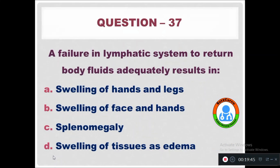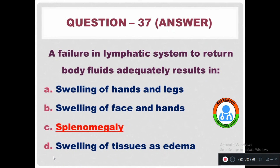Question 37: A failure in the lymphatic system to return body fluids adequately results in — Option A: Swelling of hands and legs. Option B: Swelling of face and hands. Option C: Splenomegaly. Option D: Swelling of tissues and edema. The right answer is splenomegaly — enlargement of the spleen.